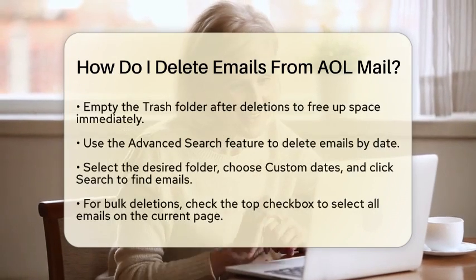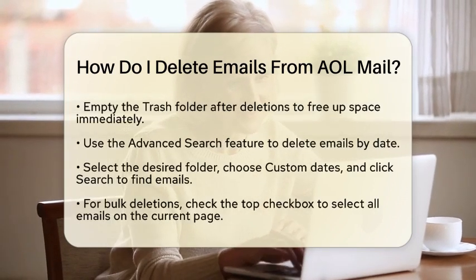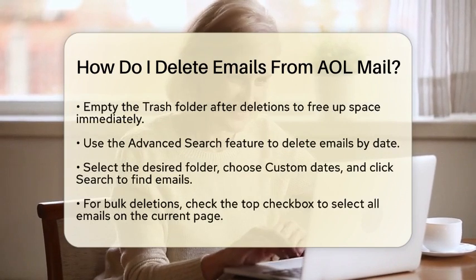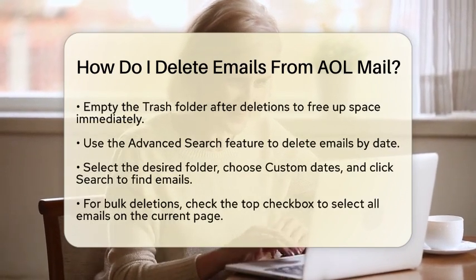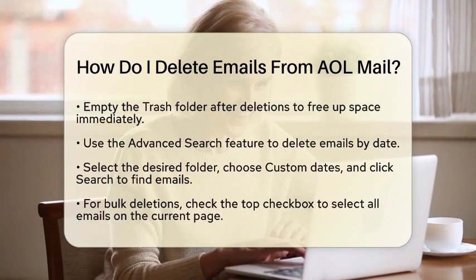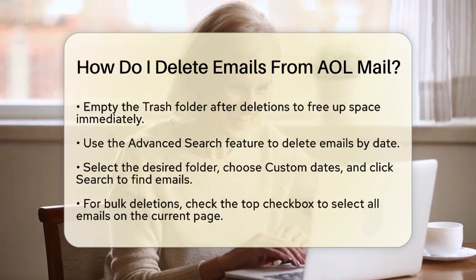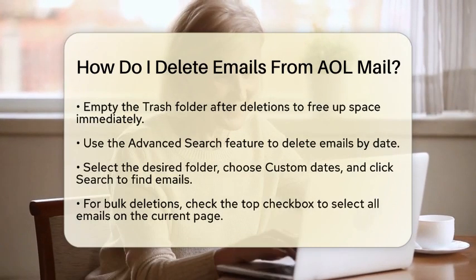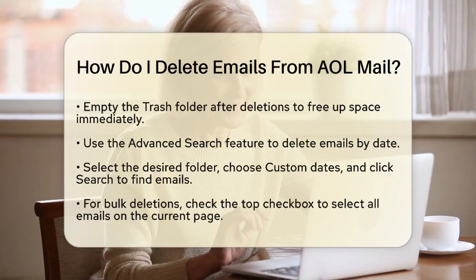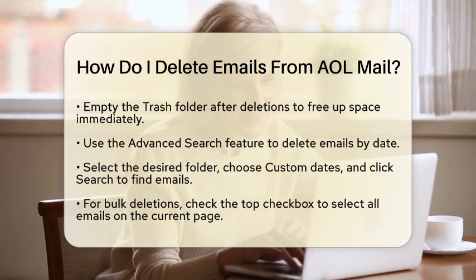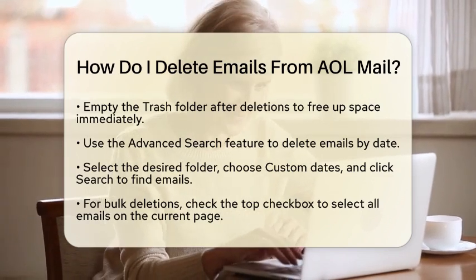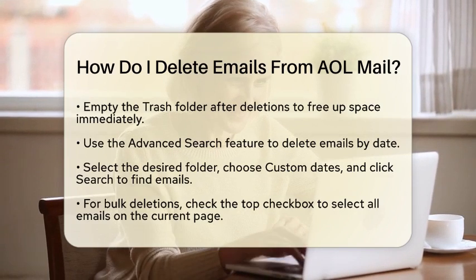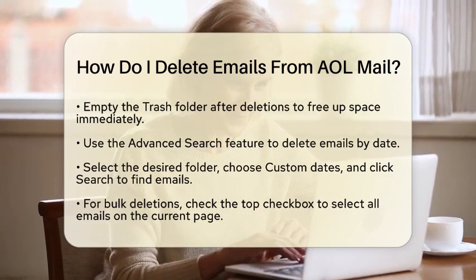Choose the folder you want to search, like your inbox. Under the date option, select custom dates and enter the date range you are interested in. Click Search, select the emails that appear, and hit Delete. For mobile users, you can type date filters in the search field, like after a specific date or before a specific date, to find emails quickly.